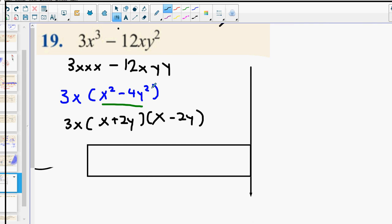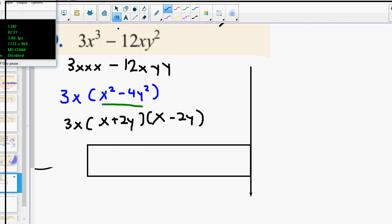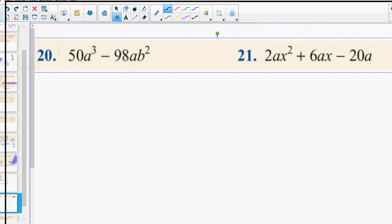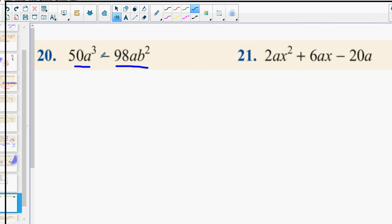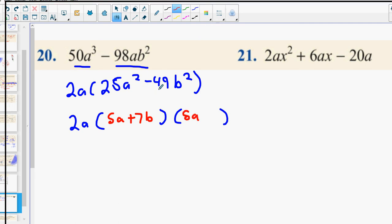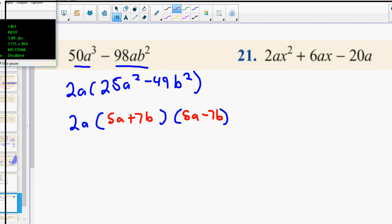Now, this one here, guys. Take out 2a. And we get 25a squared minus 49b squared. And look, we're in business now, aren't we? 2a into 5a plus 7b, 5a minus 7b. Everybody cool with that? Next one.